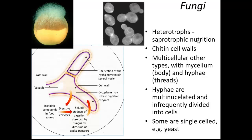Fungi! They're all heterotrophs — they feed on other organisms, dead or alive, and typically in the case of fungi the organisms will be dead. This is called saprotrophic nutrition. Looking at this mucor growing through a peach — not just on top of it, but through it — as its hyphae grow through, they secrete digestive enzymes, and then the products of digestion are absorbed back in by diffusion or active transport.